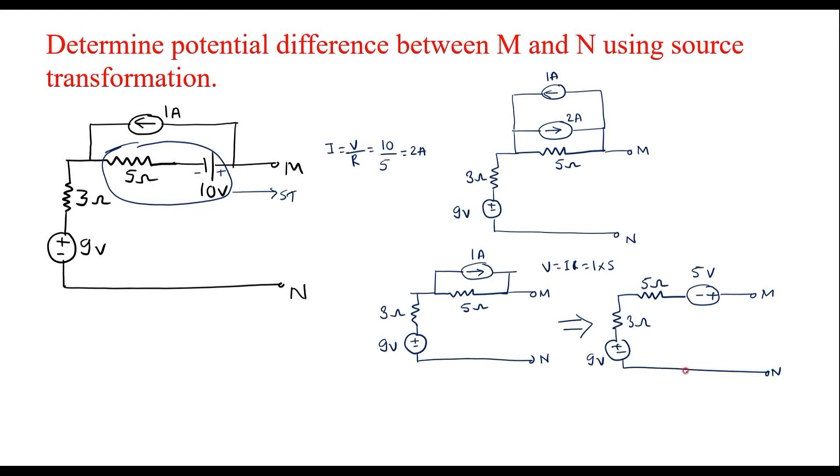This is N. Now here we can observe that 5 ohm and 3 ohm are in series. Voltage sources are in series. Along with that, both voltage sources are having the same direction. Therefore, these two can be added up. This terminal is M, this terminal is N. The value of this is 8 ohm. 9 plus 5, that is 14 volt. Direction is plus minus. So this is the potential difference between M and N.